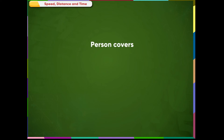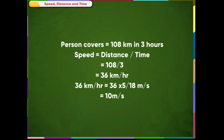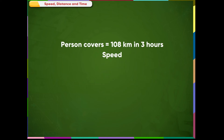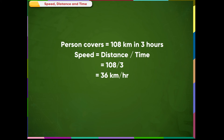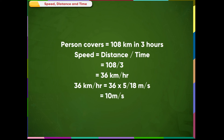Solution: The person covers 108 kilometers in 3 hours. Speed is equal to distance divided by time, which is 108 divided by 3, equal to 36 kilometer per hour. Converting: 36 kilometer per hour is equal to 36 multiplied by 5 by 18 meter per second, which is equal to 10 meter per second.